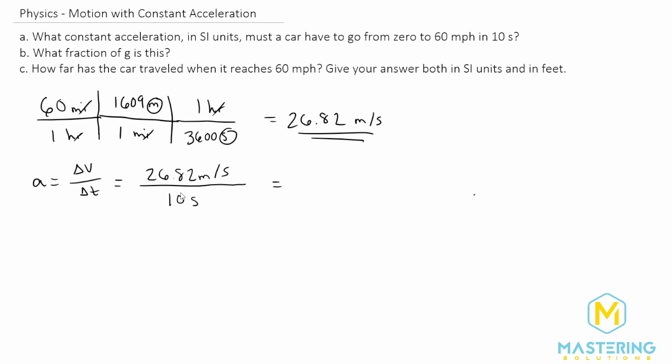If we're dividing something by 10 we can just move the decimal place over. So that'll be 2.68 meters per second squared, and we'll round that to 2.7. So for part a there is our answer.